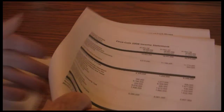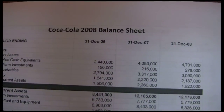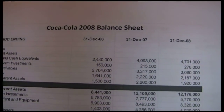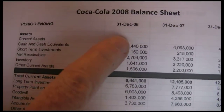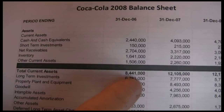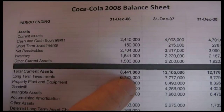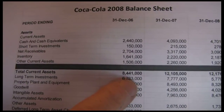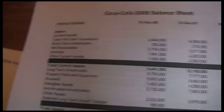We're going to start with current assets. Current assets, long-term assets, liabilities — everything associated with assets and liabilities can be found on the balance sheet. On the Coca-Cola 2008 balance sheet for the 2006 fiscal year, we scroll down to total current assets and see that listed as $8,441,000. This information is actually in thousands, so that is $8,441,000,000 in current assets for Coca-Cola during the 2006 fiscal year.